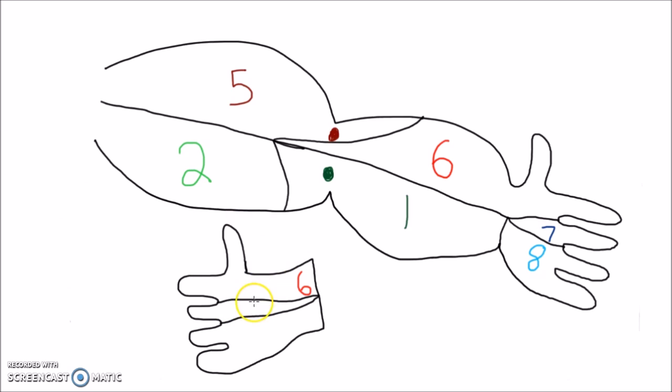To test for sensory deficits, examine the dorsal surface of the thumb, C6, middle finger, C7, and pinky, C8.